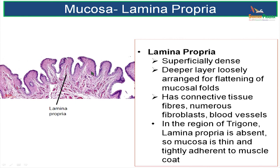Lamina propria contains connective tissue fibers, numerous fibroblasts, and blood vessels. Please note, in the region of the trigone, lamina propria is absent. So the mucosa is very thin and is tightly adherent to the muscle coat. That is the significance of the area of the trigone, where the mucosa is thin because of the absence of lamina propria and is tightly adherent to the muscle coat.